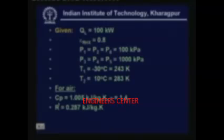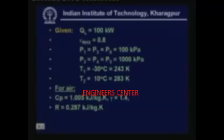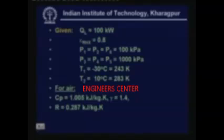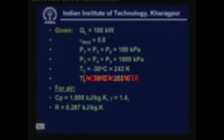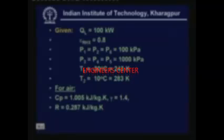The given information is as follows: QL is 100 kW, effectiveness of the heat exchanger is 0.8, suction pressure is 100 kPa, discharge pressure is 1000 kPa, temperature T1 is minus 30°C (243 K), temperature T2 is 10°C (283 K), Cp is 1.005 kJ/kg·K, gamma is 1.4, and R is 0.287 kJ/kg·K.